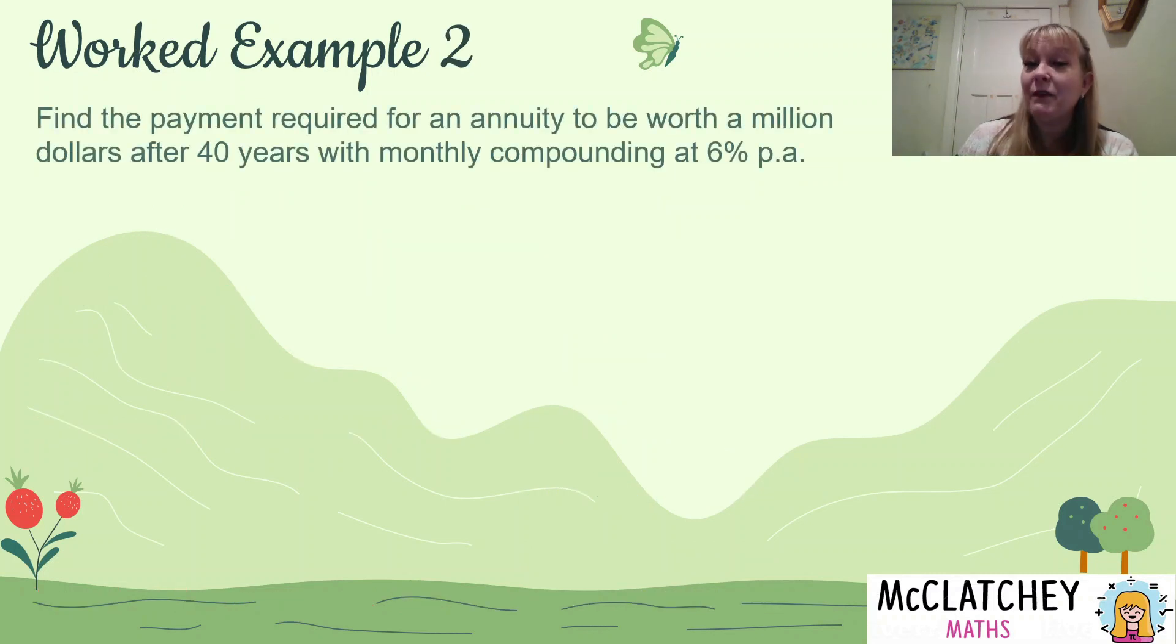This time we're finding the payment required for the annuity to be worth a million dollars after 40 years with monthly compounding at 6% per annum. This is quite a valid question. You might be wondering how much do you have to save a month starting when you're 20 years old, working towards retiring at the age of 60. 6% per annum is not bad for an investment at the moment. And you're going to need at least a million dollars to retire on anyway. So this is quite a valid question that people quite often ask, particularly as they get towards my age, how much do I have to retire on?